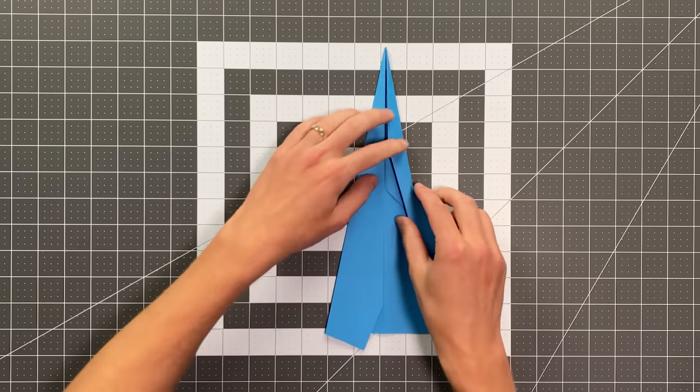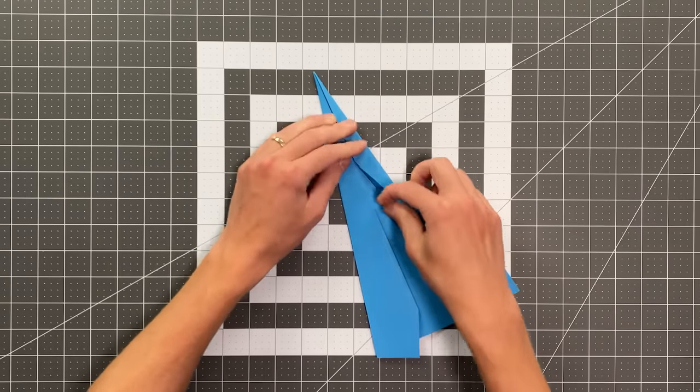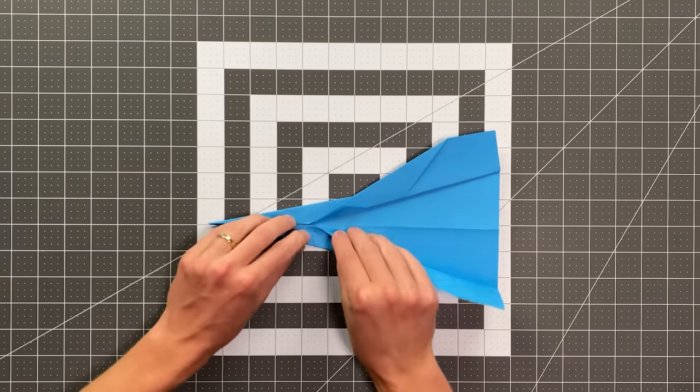And now I want to fold out from that point down to this corner. I'll take this layer here behind it over that same edge as well. And then I'll do the same exact thing on the other side.